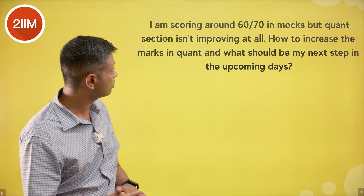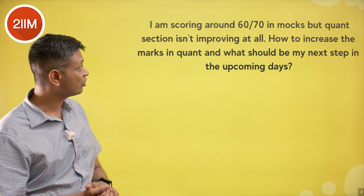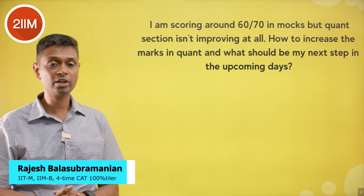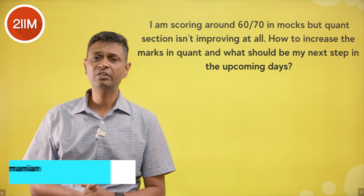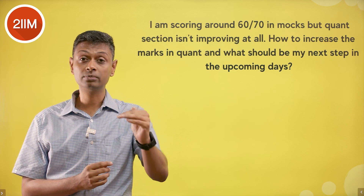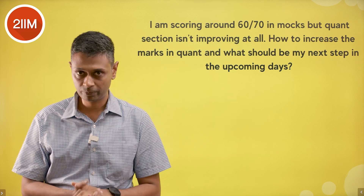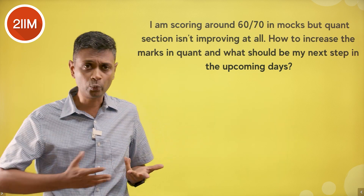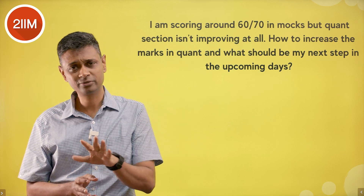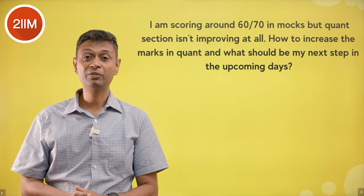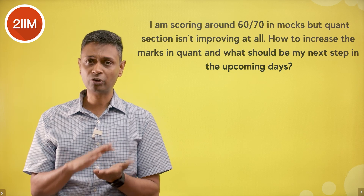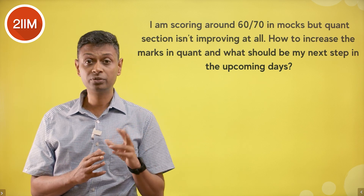A student asks: scoring 60 to 70 in mocks but the quant section isn't improving — what should the next step be? 60 to 70 is a good place to start, and chances are the actual exam is slightly easier than the mocks. If quant is at the 20-25 marks level, that's good. But if it's at 10-12, you need to reprioritize.